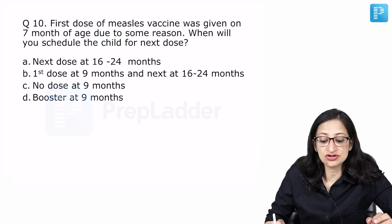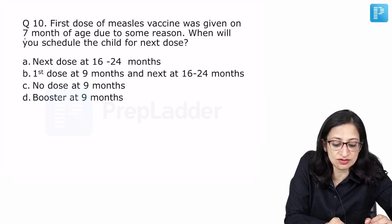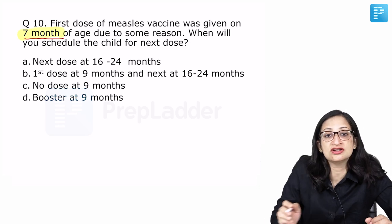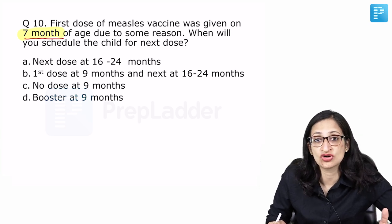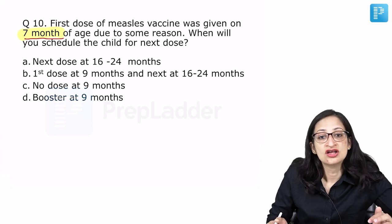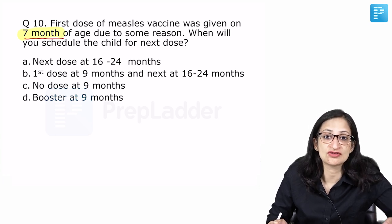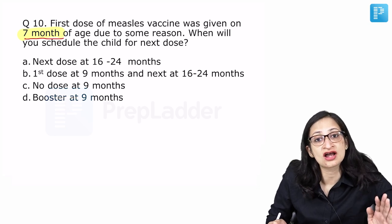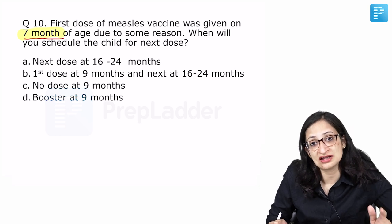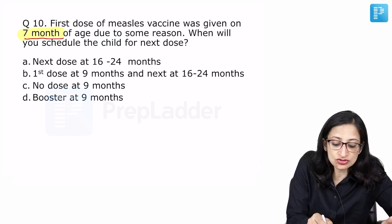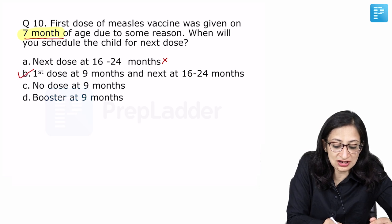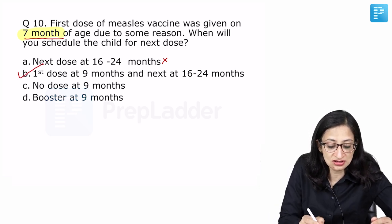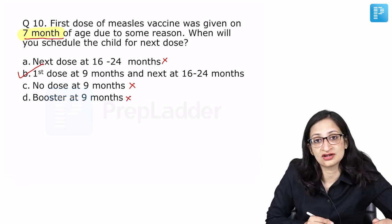Moving on to the next question. The first dose of measles vaccine was given at 7 months due to some reason. We know normally measles vaccine is recommended at 9 completed months of age because prior to that there are some maternal antibodies which might interfere with the immune response to measles. If due to any reason say an epidemic or something the measles vaccine was given at 7 months of age, it is not counted as such as a part of immunization schedule. So, you still need to give a dose at 9 months and a booster at 16 to 24 months. First dose at 9 months and next at 16 to 24 months is the best answer.